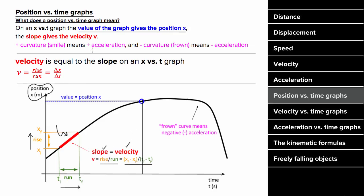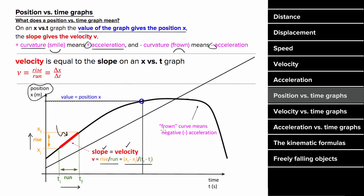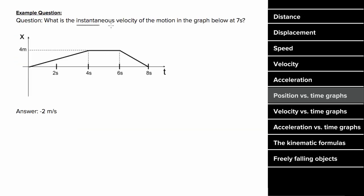You can also tell if there's acceleration on a position versus time graph depending on whether there's curvature. Curvature that looks like a smiley face represents positive acceleration, and curvature that looks like a frowny face represents negative acceleration. Graphs with constant slope have constant velocity and zero acceleration. What would an example problem with position versus time graphs look like? Let's say we have this graph and we want to determine the instantaneous velocity at seven seconds, so we locate seven seconds and find the slope in that region.